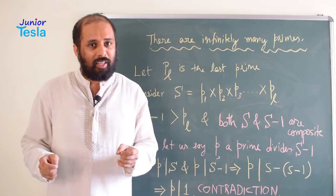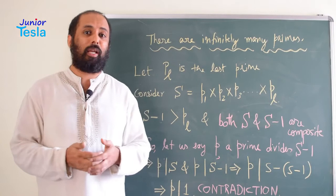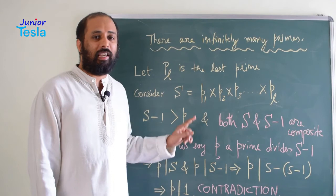So if P divides 1, then definitely P should be plus or minus 1. But we know that prime number cannot be plus or minus 1. So this is a contradiction.